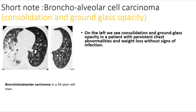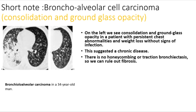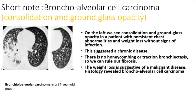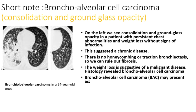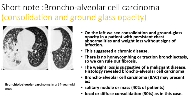A patient with persistent chest abnormalities and weight loss shows consolidation and ground glass opacity without signs of infection, suggesting chronic disease. There is no honeycombing or traction bronchiectasis, ruling out fibrosis; weight loss is suggestive of malignancy. Histology revealed bronchoalveolar cell carcinoma (BAC). BAC may present as a solitary nodular mass (40%), focal or diffuse consolidation (30%), or diffusely ill-defined centrilobular nodules (30%) due to endobronchial spread.